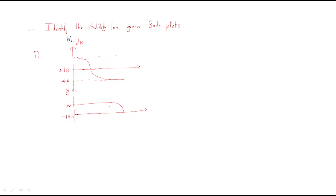In order to tell the stability, we can use two methods. The first method is by identifying the gain crossover frequency and the phase crossover frequency. By those values we can identify the stability.